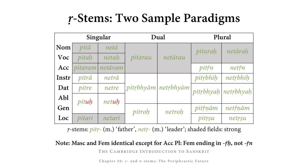Let's look at two R-stem paradigms — one from each group: pitṛ (father), a kinship term, and netṛ (leader), an agent noun. The shaded fields in this table contain the strong cases. In the singular we have pittā, pittaḥ, pittaram. The nominative and vocative are a little unexpected in their form and are best memorized. Pittaram, on the other hand, is predictable: the stem in guṇa (pittar) plus the ending -am that we've already seen in many other paradigms.